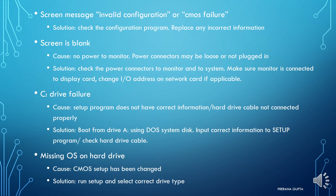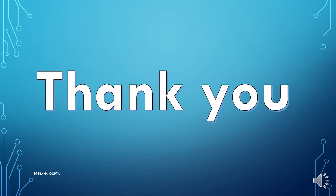C drive failure is caused when the setup program does not have correct information or the hard drive cable is not connected properly. Solution: boot from drive A using a DOS system disk, input correct information to the setup program, or check the hard drive cable. For a missing OS on the hard drive, the cause is that CMOS setup has been changed. Solution: run setup and select the correct drive type.